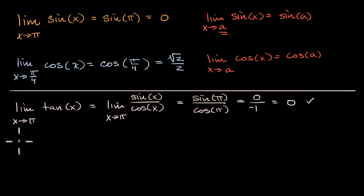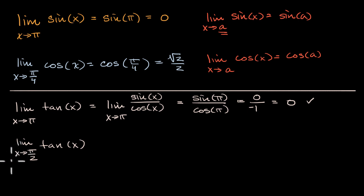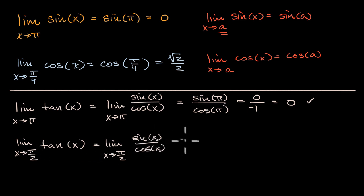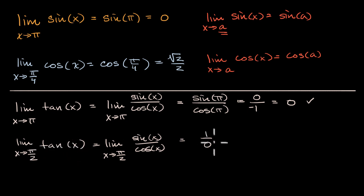What is the limit as x approaches pi over two of tangent of x? This is the limit as x approaches pi over two of sine of x over cosine of x. Sine of pi over two is one, but cosine of pi over two is zero. So substituting in gives you one over zero. Pi over two is not in the domain of tangent of x, and so this limit does not exist.